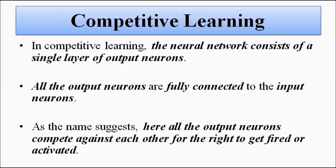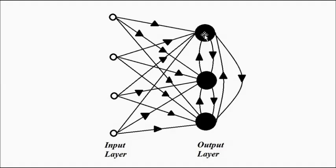The output layer of neurons participates in a competition where the neuron with the maximum net input is the winning neuron. This is similar to a student who secures the maximum marks in an exam coming top of the class, or a candidate scoring maximum marks securing the top rank, or a player with the maximum points winning a sports competition. It's a winner-takes-all kind of mechanism.